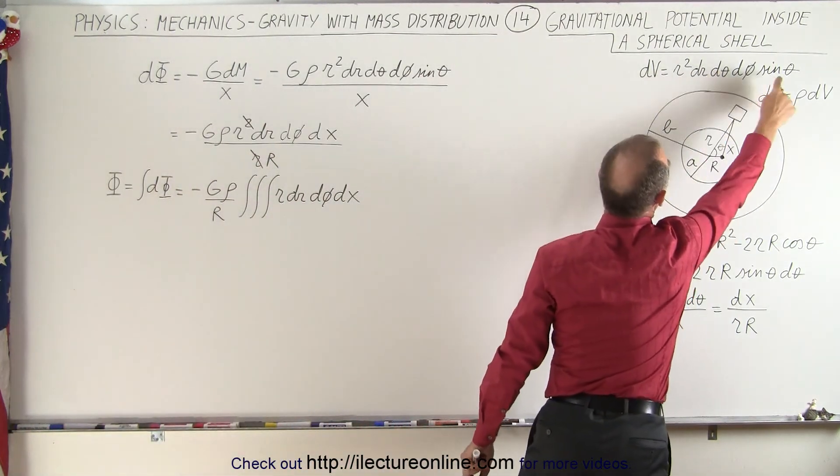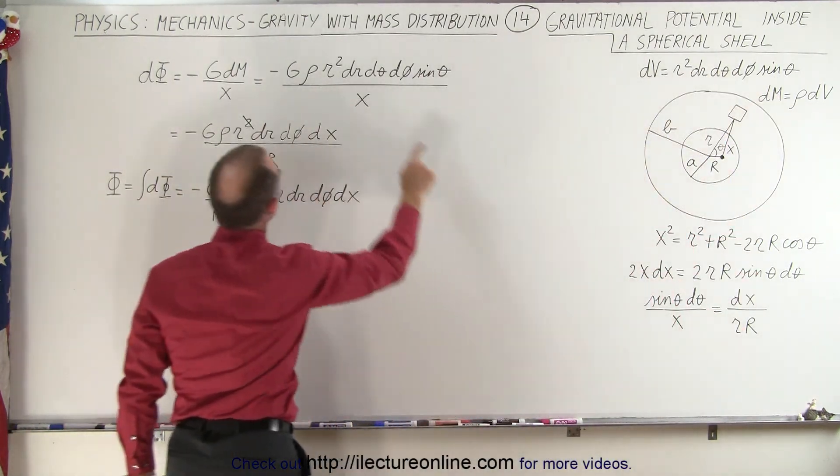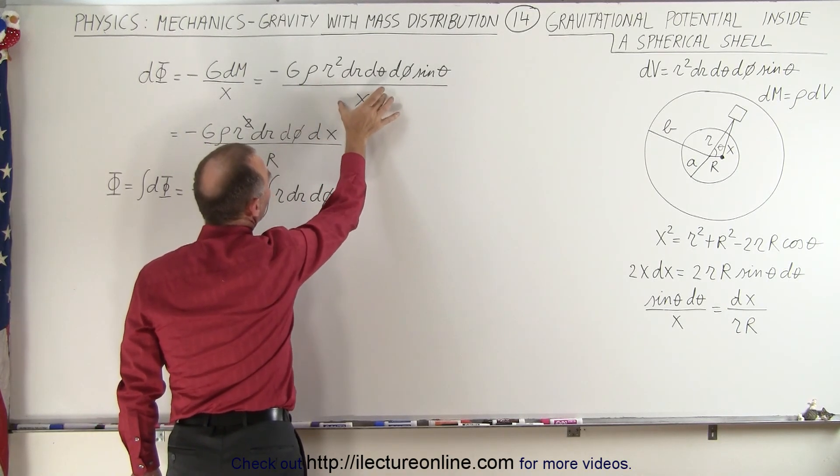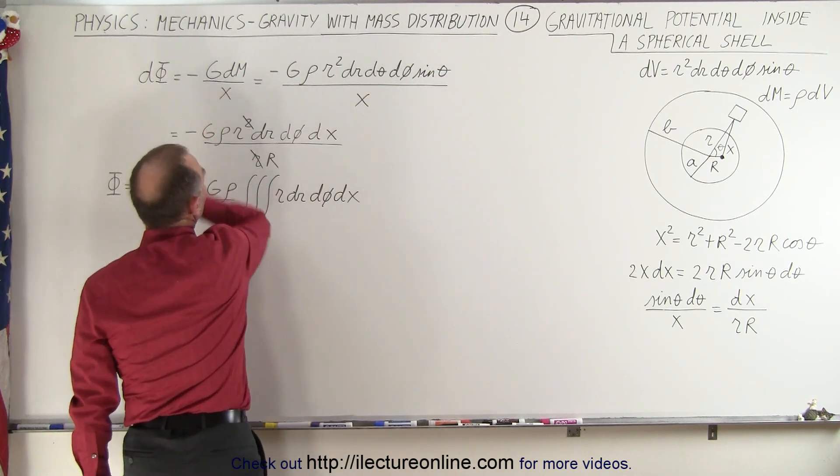we can define that as being minus g times dm over x, and since dm is equal to the density times the dV and the dV is spelled out right here, we can replace that and we get this as our small little contributor to the gravitational potential.